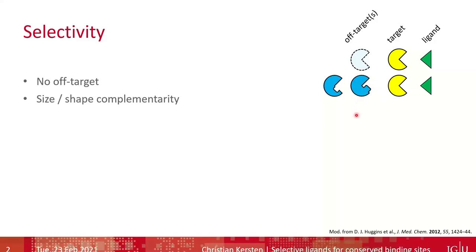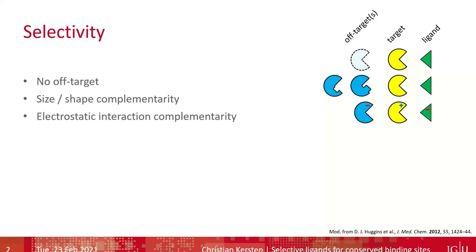We also find the other way around, where the off-target has a larger binding site with lower complementarity, creating holes in the interaction and thereby losing affinity and gaining selectivity. We might also be able to exploit structural differences like different residues — if a certain donor-acceptor or charge profile must be met and a residue is exchanged with different properties, an attracting interaction might be replaced by a repulsive one, which is something we can easily exploit for selectivity as well.